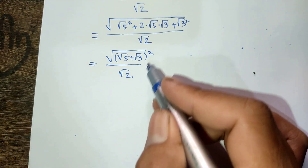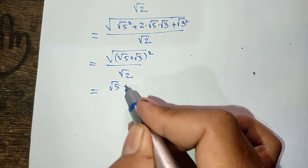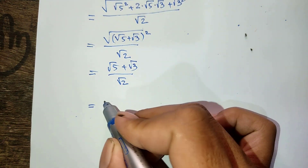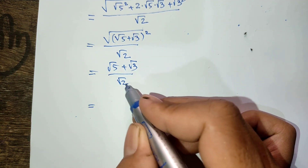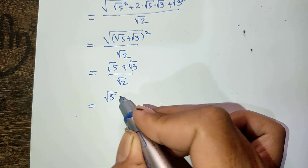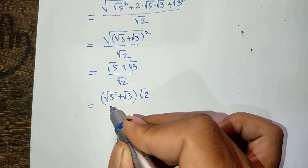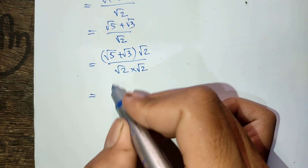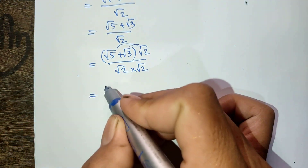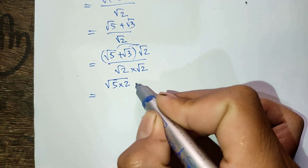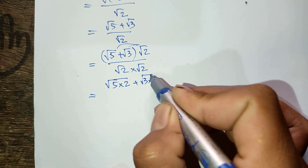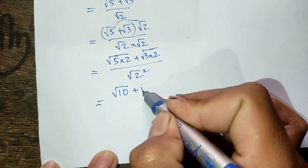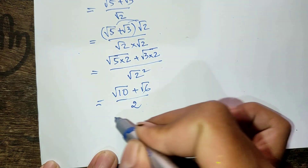Simplifying the square and square root, we get (square root of 5 + square root of 3) divided by square root of 2. To rationalize, I multiply numerator and denominator by square root of 2. The denominator becomes square root of 2 times square root of 2, which equals 2. So the final answer is (square root of 10 + square root of 6) divided by 2.